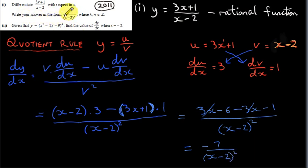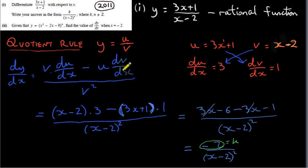We want our answer in the form k divided by x minus 2 to the power of n, where k and n are integers. By comparing, we can see that k is minus 7. And n is just the power, so n equals 2.